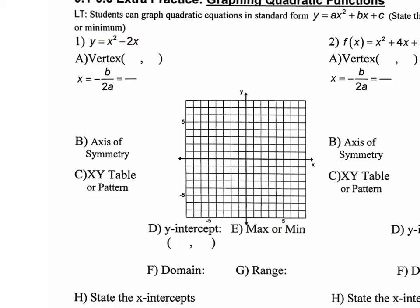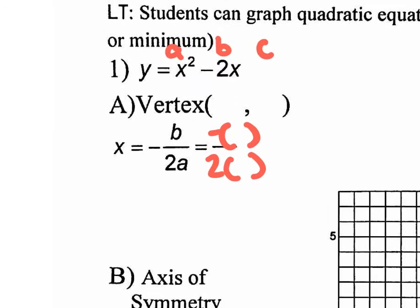Here's our equation. We're going to start by finding the vertex. We have the formula written for us — you should have it memorized by tomorrow. So x equals negative b over 2a. I like writing the negative on the b itself. My a value is 1, my b value is negative 2, my c value is 0. So I plug in the b value of negative 2 into those parentheses. I really have a negative negative 2, which becomes positive 2. My a value is 1, so I plug in 1 down there. So x equals positive 2 over 2, giving a vertex x value of 1.